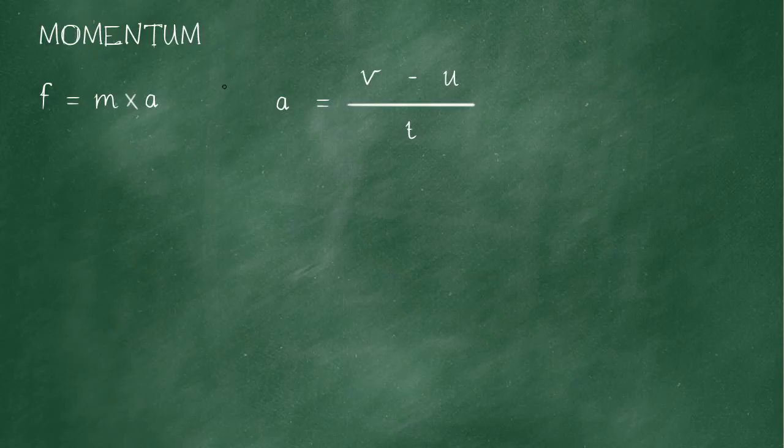So, instead of where a is here, we're going to actually put v minus u over t. So, bear with me. Let's copy down the bit we're not changing. F is m times all of this, v minus u over t. Okay? There we go.